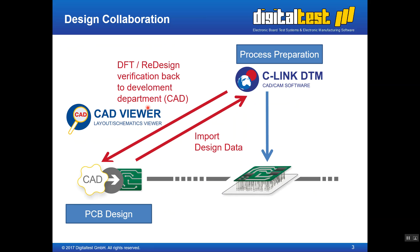Another use case is design collaboration. In the PCB design department, CAD data will be created and can be sent to the ceiling DTM software where the process preparation takes place. A first step in the process is to verify the PCB design — whether it is testable, and if the nets can be accessed with ICT probes or flying probe methods. This verification result can be given back to the development department. It can be a simple report, but it can also be an interactive report with highlighting by the CAD viewer.